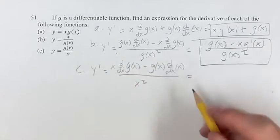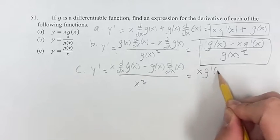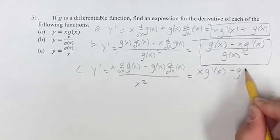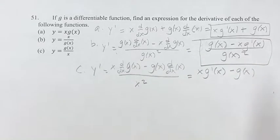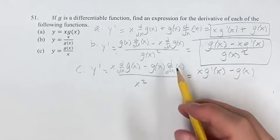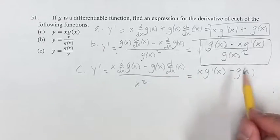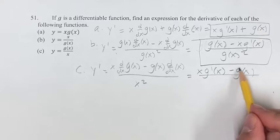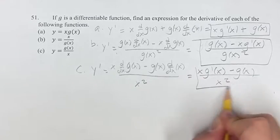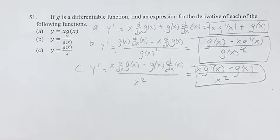So we have x times the derivative of g of x minus g of x times the derivative of x. Found this a million times by now. Derivative of x is just 1, so g of x times 1 is g of x. So we can just leave it as that, over x squared. And this is your answer for c,